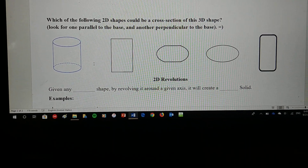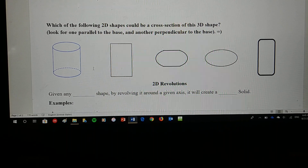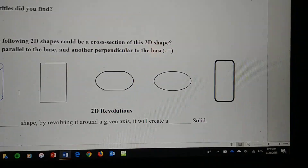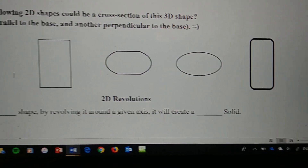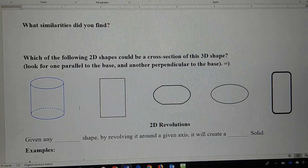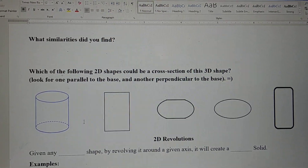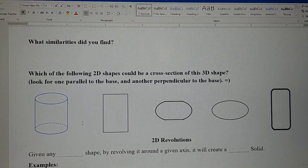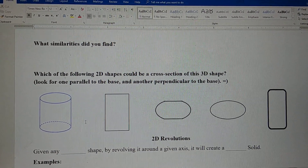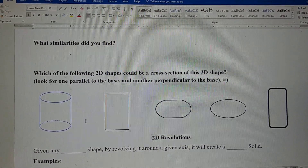Now we have: which of the following 2D shapes could be a cross-section of this 3D shape? So when given cross-sections and a solid figure, you want to really look for two cross-sections — one parallel to the base and one perpendicular to the base. Just circle the ones that you think are the right ones.